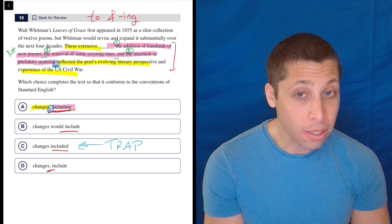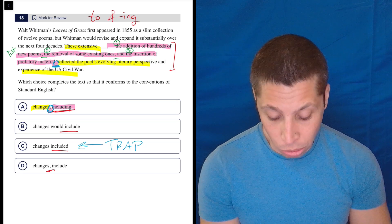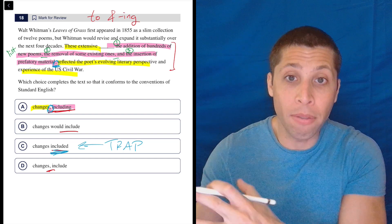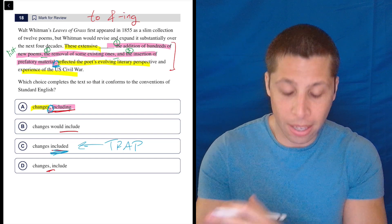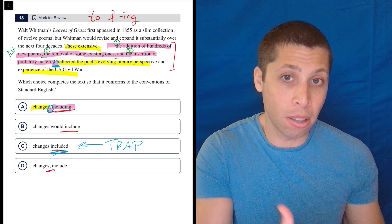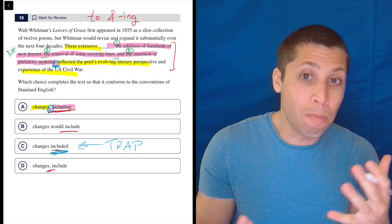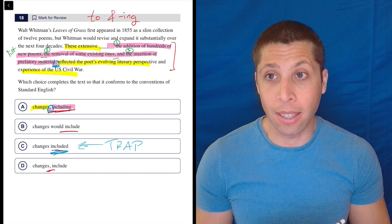And if that were the sentence, if we ended right there, then yes, we would need to use the word 'included' because that would need to be the verb of the sentence, right? The subject is 'these extensive changes' and 'included' is the verb. If we used an -ing form, then we wouldn't have a strong enough verb to anchor that sentence.